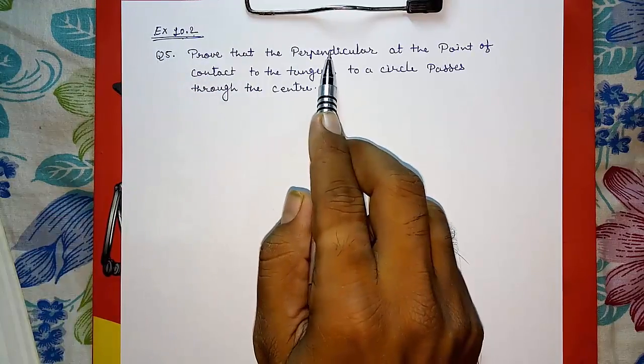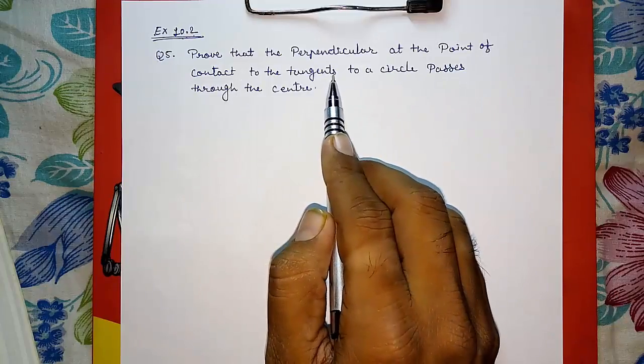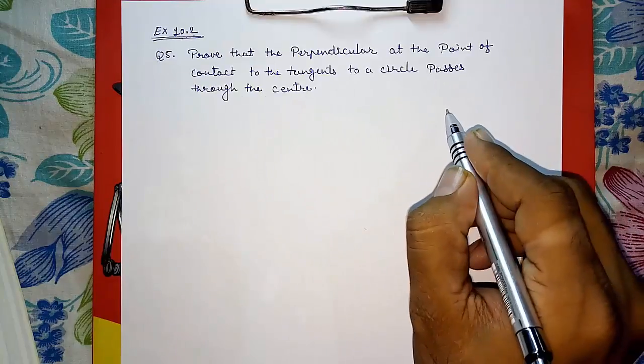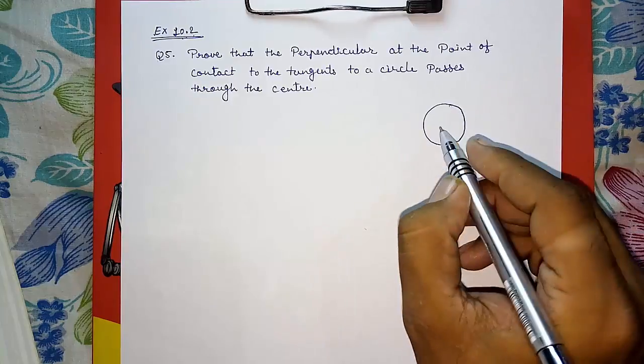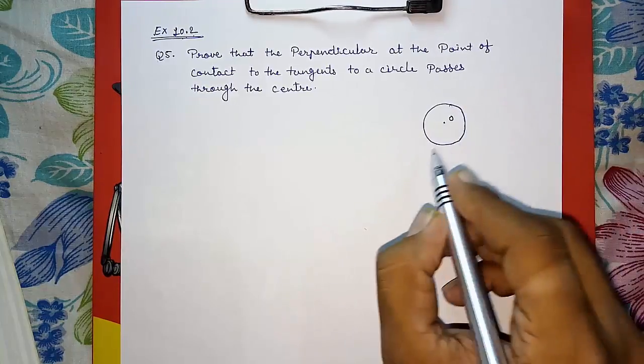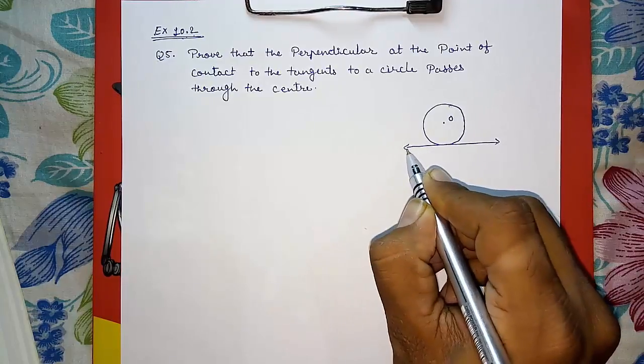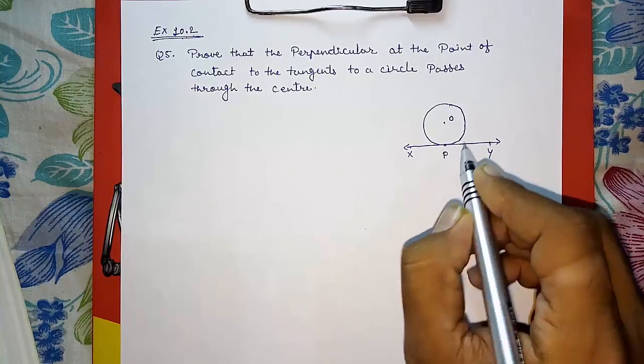Prove that the perpendicular at the point of contact to the tangent to a circle passes through the center. This means if in a circle, this is center O and a tangent XY and point P, if we want to draw perpendicular from point P, it will obviously pass through the center.